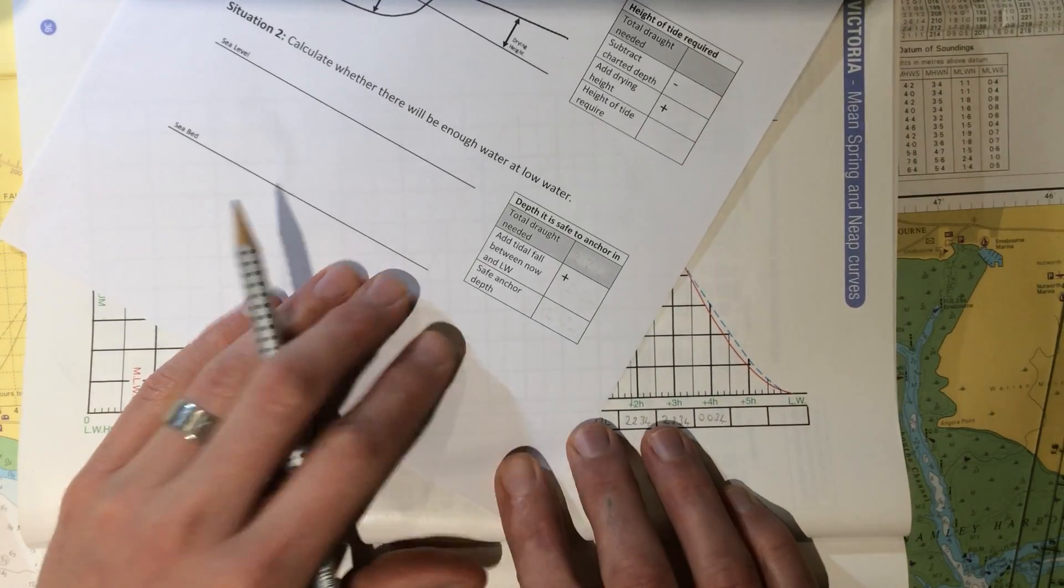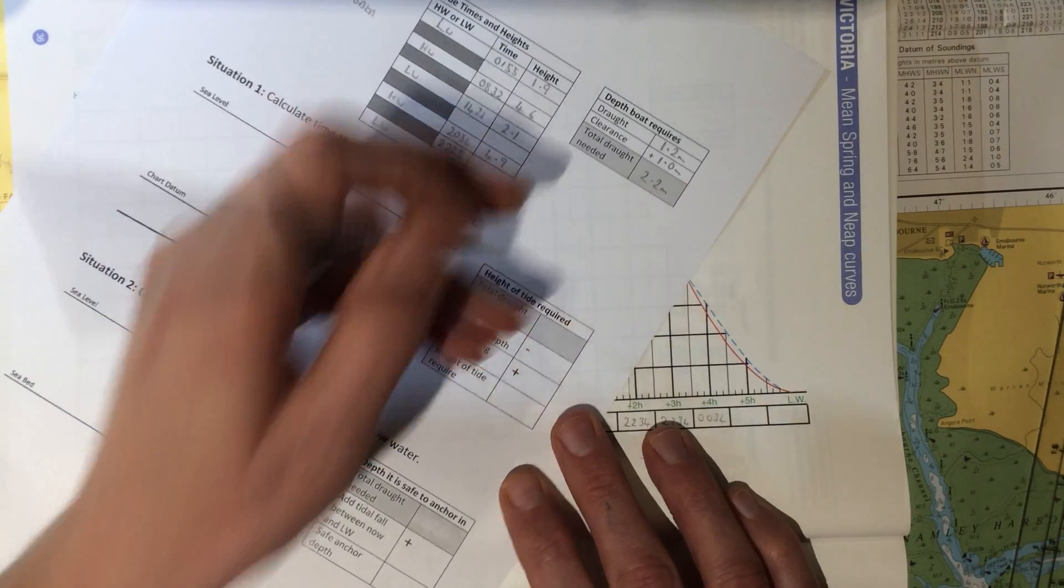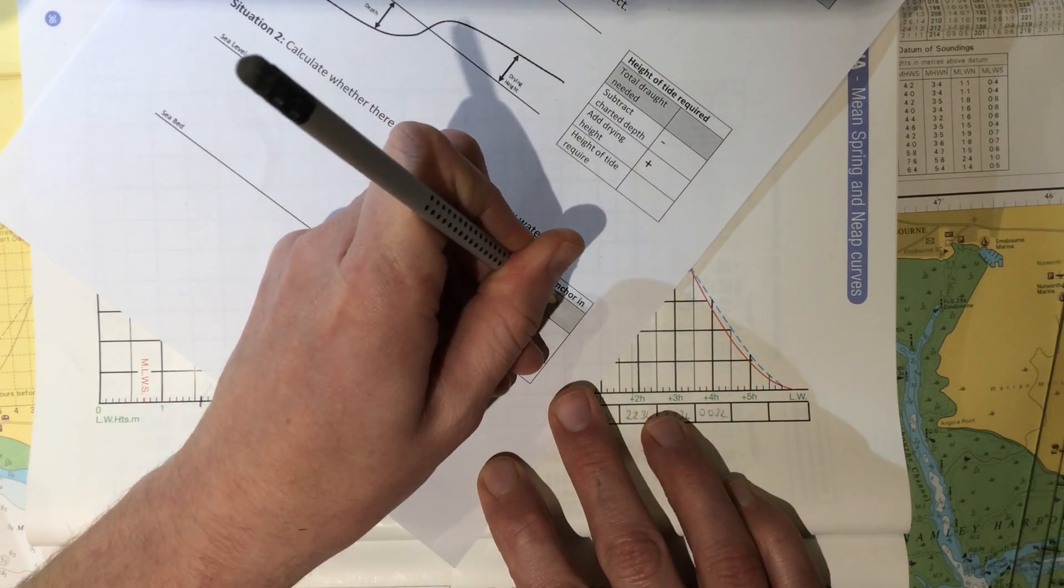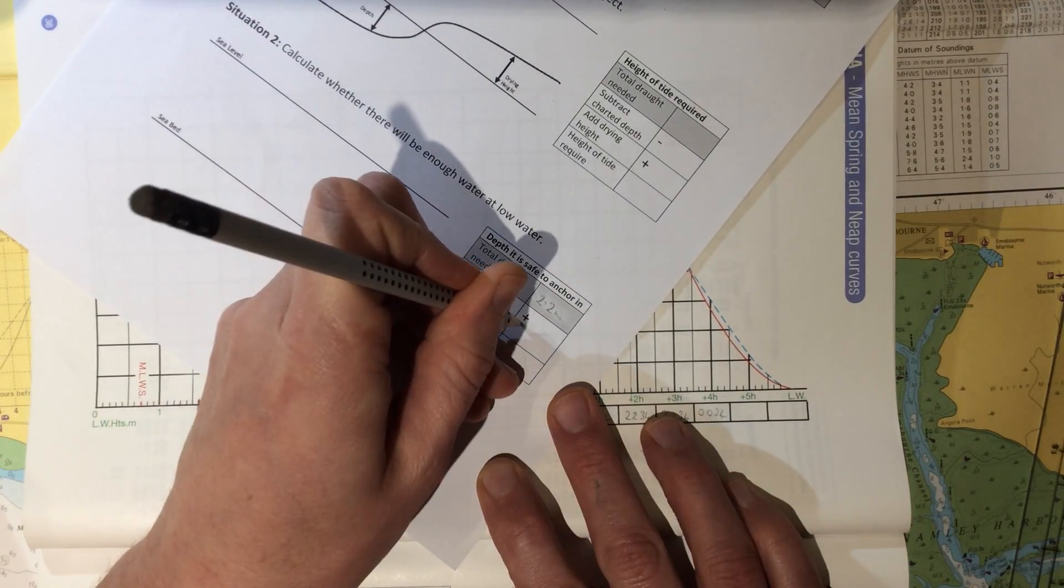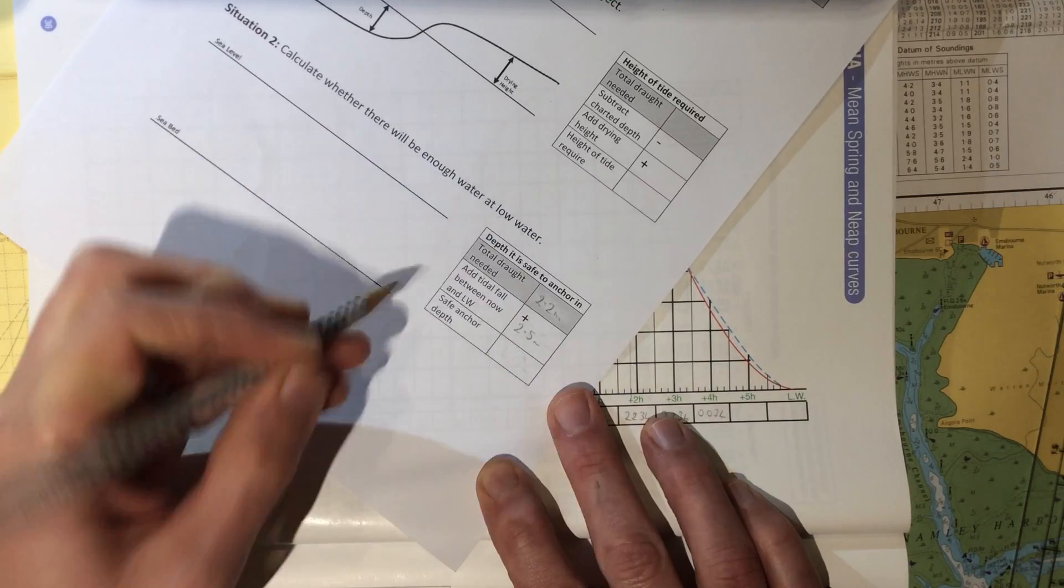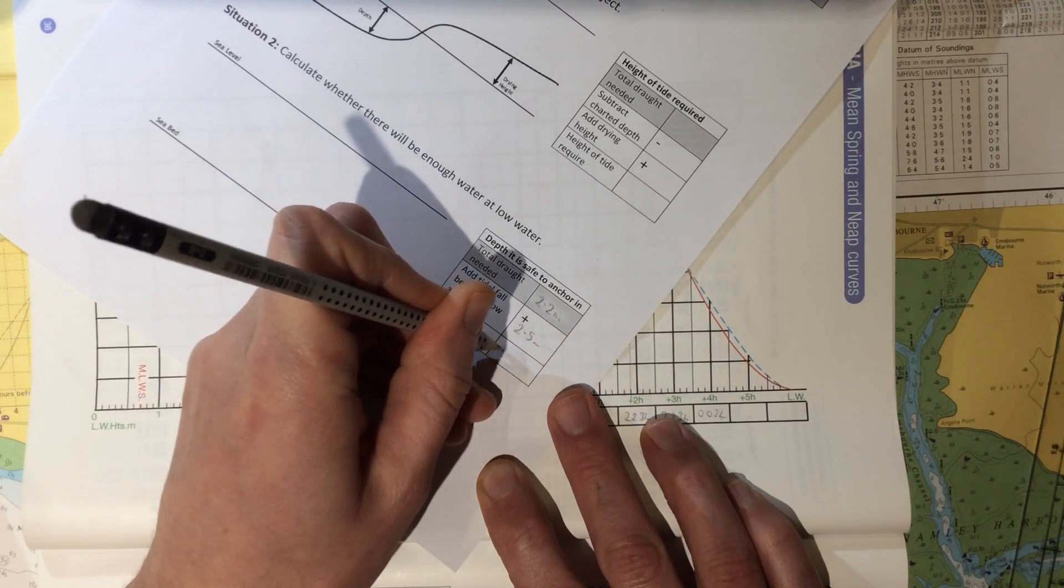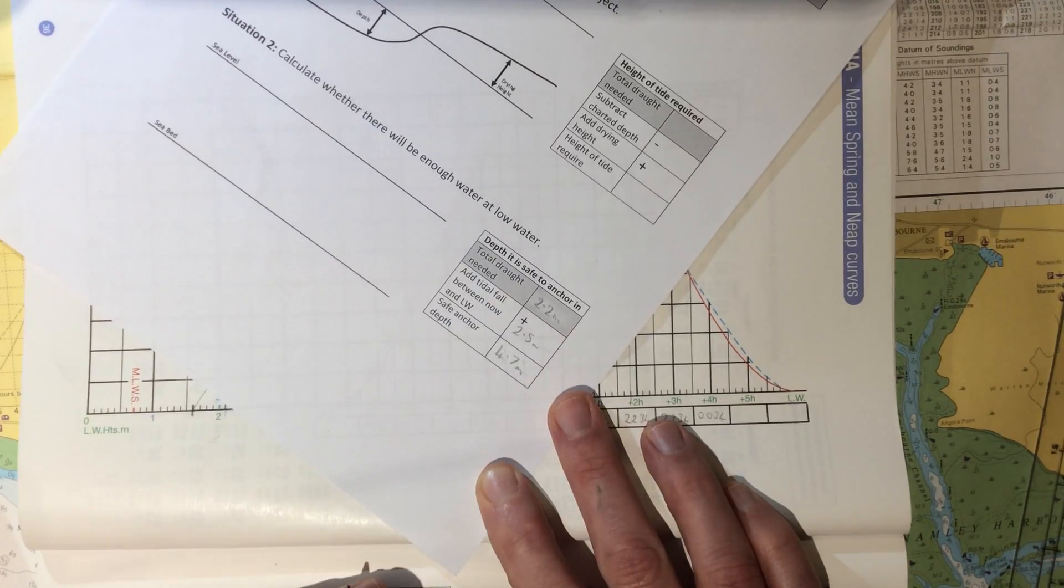So going back to our table, we know from earlier that we require 2.2 metres of water at all times. We know that the tide is going to fall by 2.5 metres, and you can see that this table indicates that we should add these two figures. So we require at least 4.7 metres.